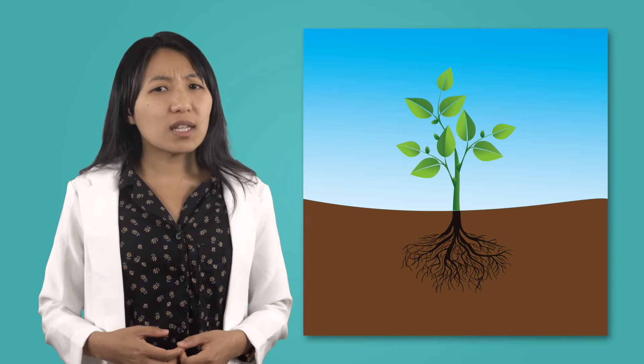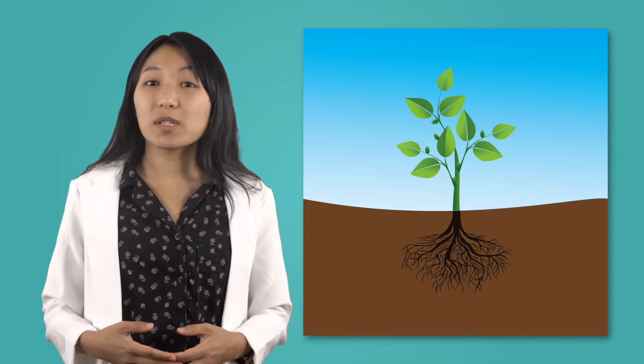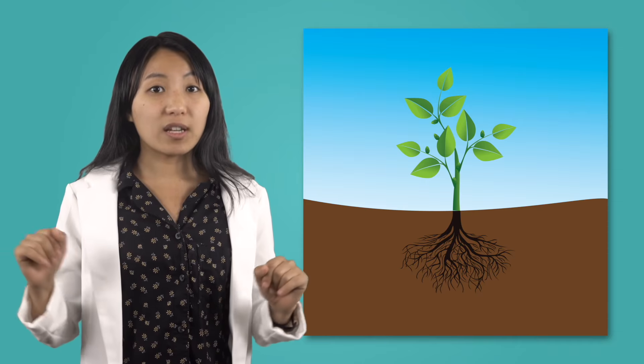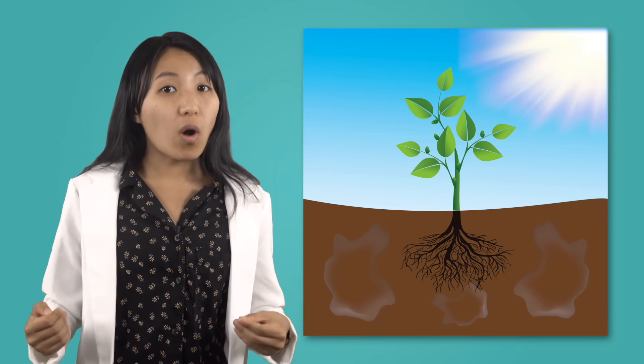Plants don't eat like animals do. Instead they absorb some nutrients from the soil and get the rest of the nutrients they need through a process called photosynthesis. Photosynthesis is when a plant uses light, water and air to create glucose or sugar water that serves as the food for the plant.